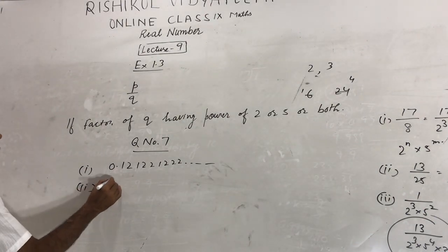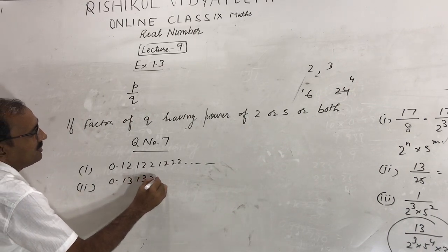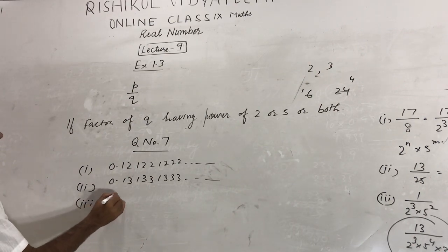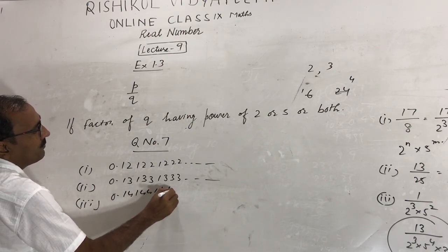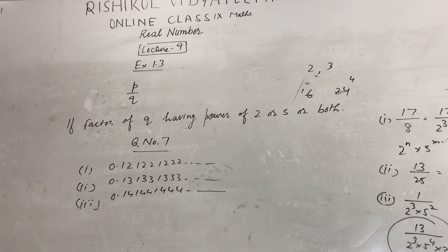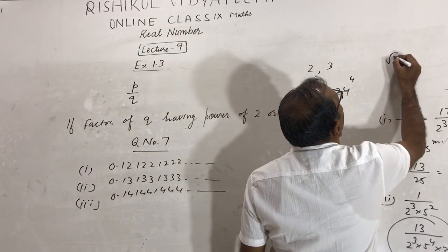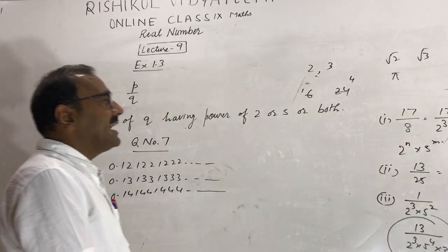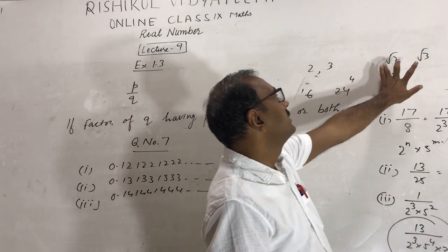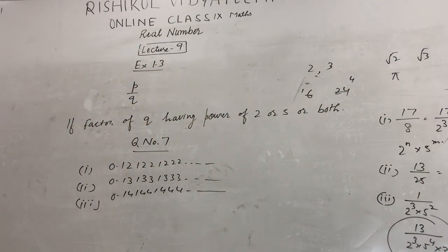Similarly, you can write 0.13123123... and also 0.14124124... up to so on. You can write many such irrational numbers whose decimal expansion is non-terminating and non-repeating. As I told you, √2, √3, and π are irrational numbers. If you take the square root of 2 and 3, the decimal expansion of these numbers is non-terminating and non-repeating.